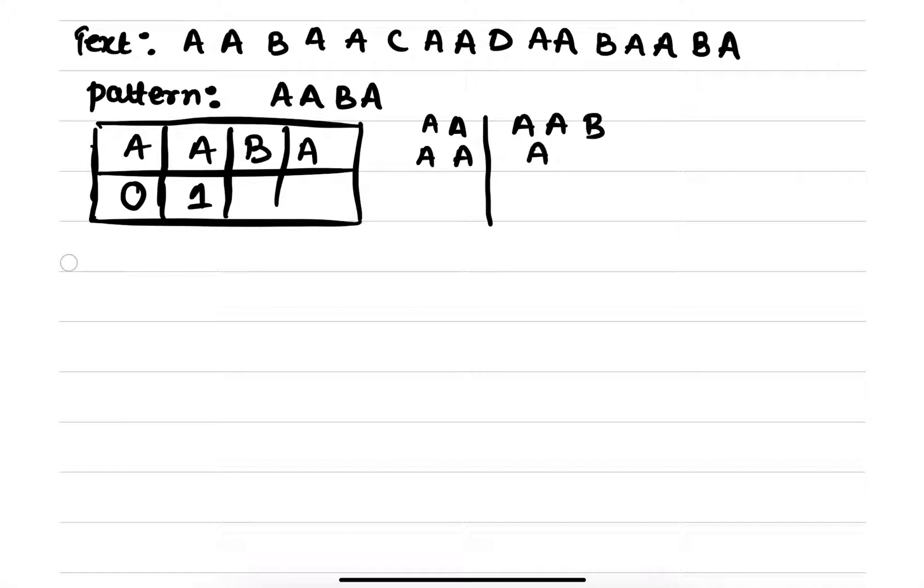A, A, B. So A doesn't match with B. A, A doesn't match with A, B. So 0, right? And the third one is A, A, B, A. So A matches with A. A, A doesn't match with B, A. A, A, B doesn't match with A, B, A. So it is also 0, right?